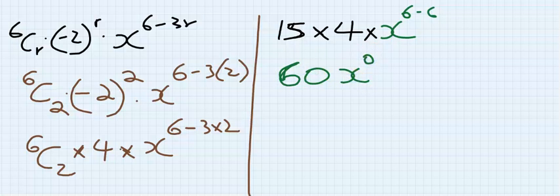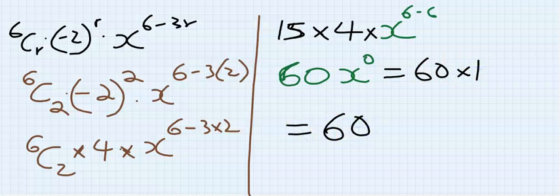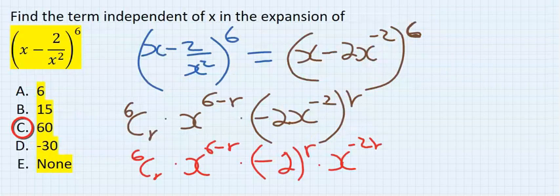...of 0. Anything to the power of 0 is 1, and my answer is 60. From our options, the answer is C.